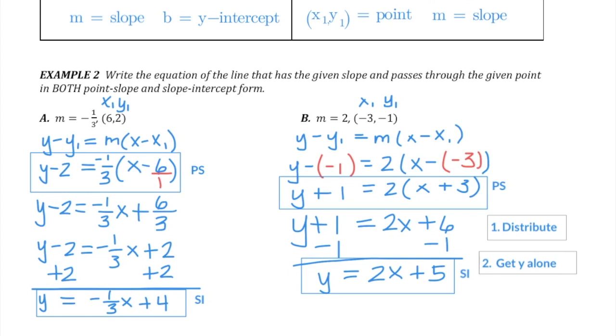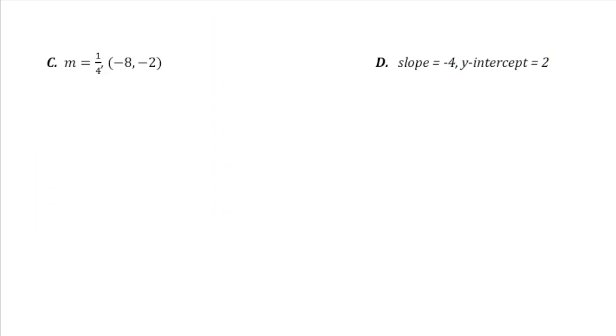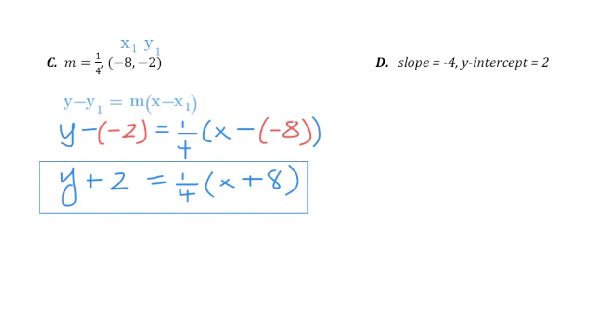In part c, again we start by taking a look and notice we are given a slope and a point, meaning we're going to begin with the point-slope formula. Same steps as always. Label your coordinates, substitute appropriately, being careful of those negatives. Next, get rid of the double signs, and here we have the point-slope form of the equation.